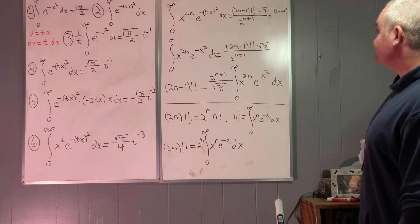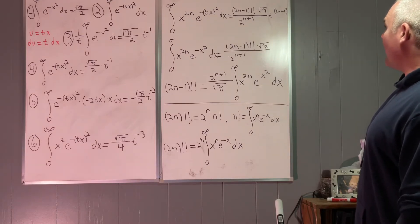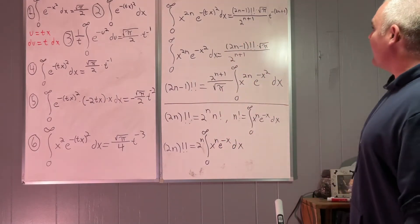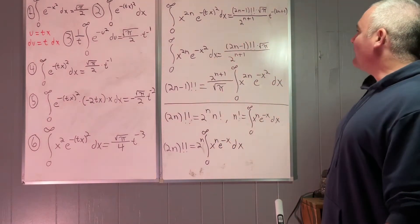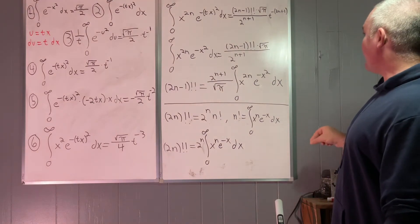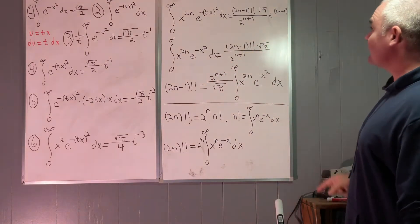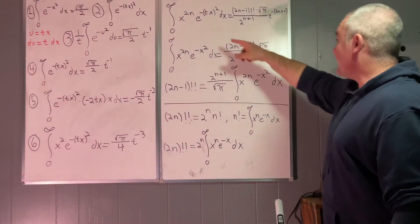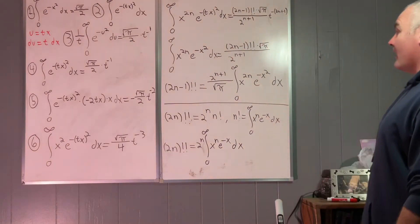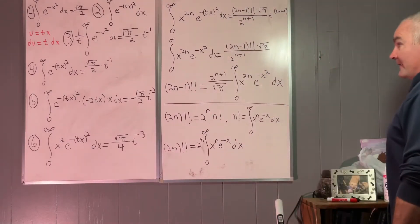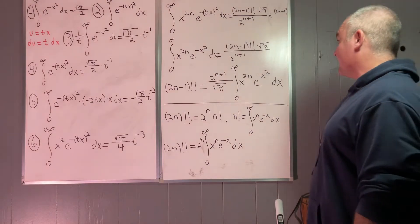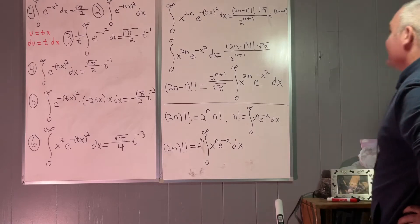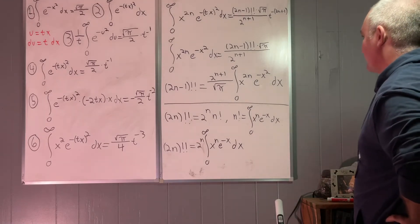In the next step, all we do is plug in 1 for t. That t goes away and you're left with: the integral from zero to infinity of x to the 2n times e to the negative x squared dx equals the quantity (2n minus 1) double factorial times the square root of pi over 2 to the n plus 1.